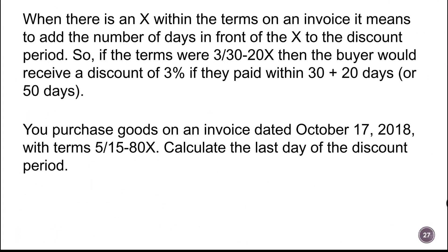When there is an 'X' within the terms on an invoice, it means to add the number of days in front of the X to the discount period. So if the terms were 3/30-20X, then the buyer would receive a discount of 3% if they paid within 30 plus 20 days, or 50 days. This extends how long you have to get the discount.